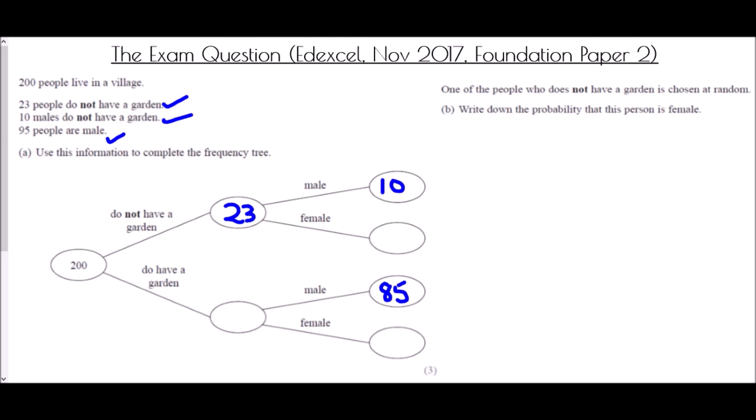But just because that's all we've been given doesn't mean we can't work anything else out. If I wanted to know how many females do not have a garden, well, there are 23 people without gardens and 10 of them are male. The remainder will be female. So 13. There are 200 people in the village and 23 do not have a garden. And so the rest, if I take 23 away from 200, that is 177. And we've been told that of those 177, 85 of them are males. And therefore, we have 92 who are female. That is our Frequency Tree completed.